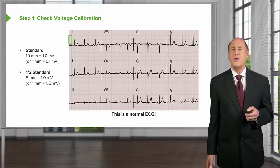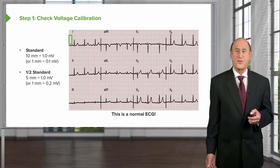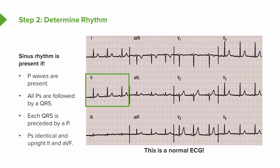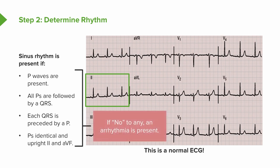You'll notice sinus rhythm — each QRS is preceded by a P wave, meaning the atrium depolarizes before the ventricle. All P waves are followed by a QRS with no blockage of the beat going through the heart. Each QRS is preceded by a P, and the P waves are all identical — upright in leads II and AVF and nice and narrow, not prolonged. If the answer to any of these checks were no, then you're talking about an arrhythmia. Right now we're just focusing on the normal.